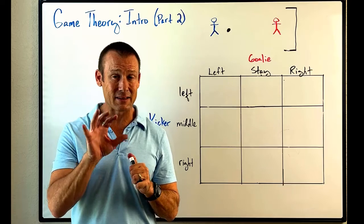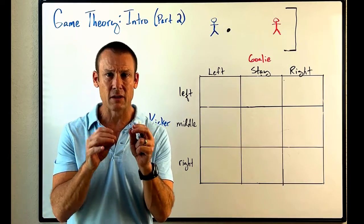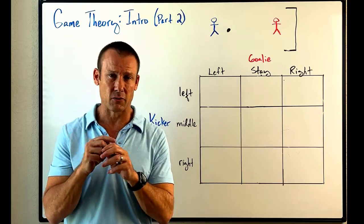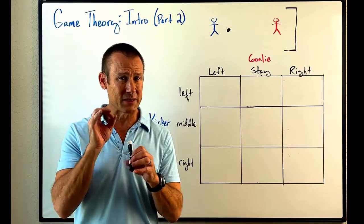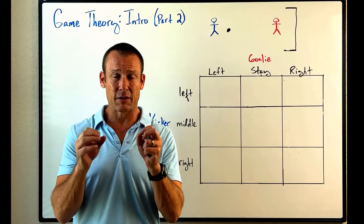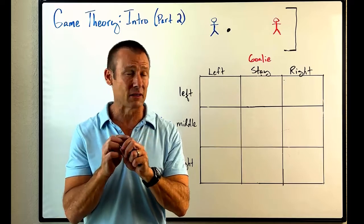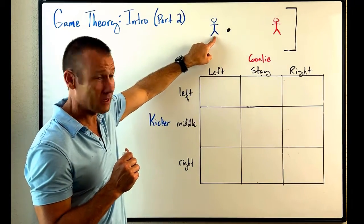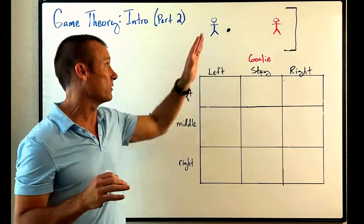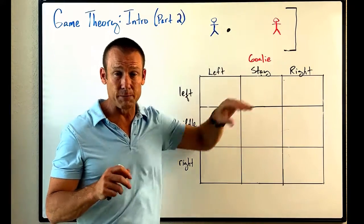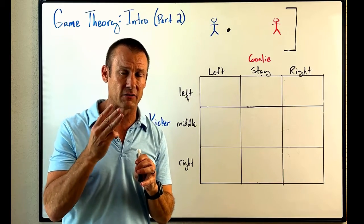The game we're going to look at is a particular situation in soccer — or football to the rest of the world, but since we're in the United States I'll use the term soccer. The situation is the penalty kick, and in the penalty kick we're going to look at two players: the kicker and the goalie.